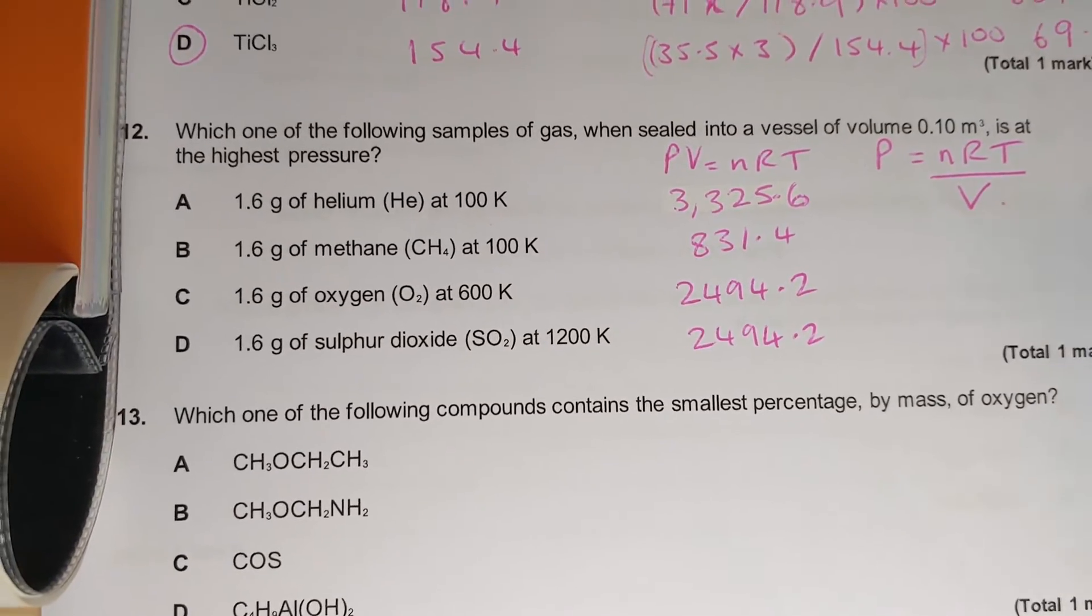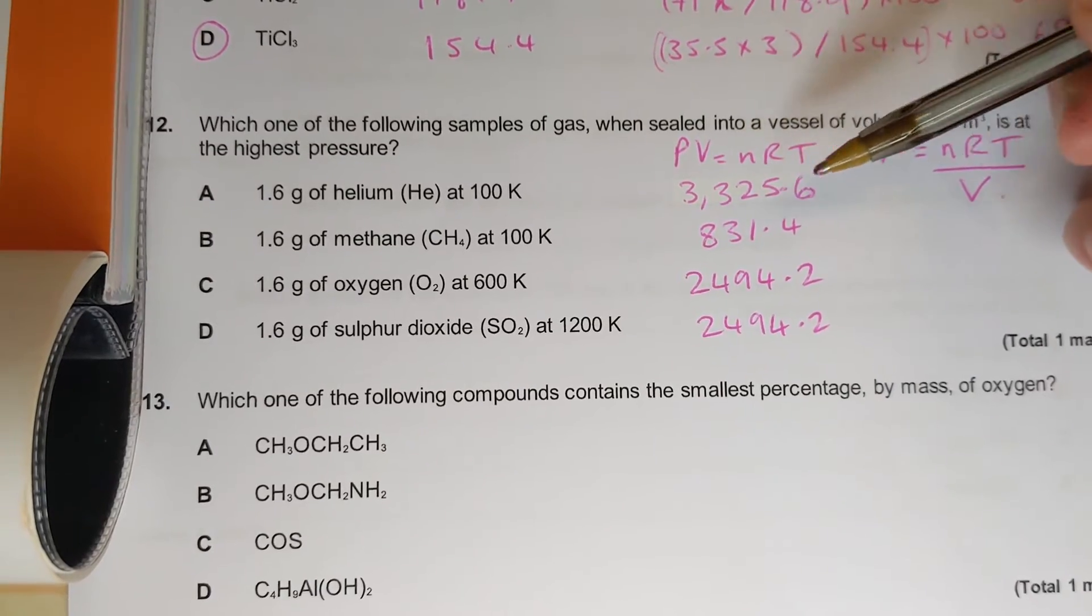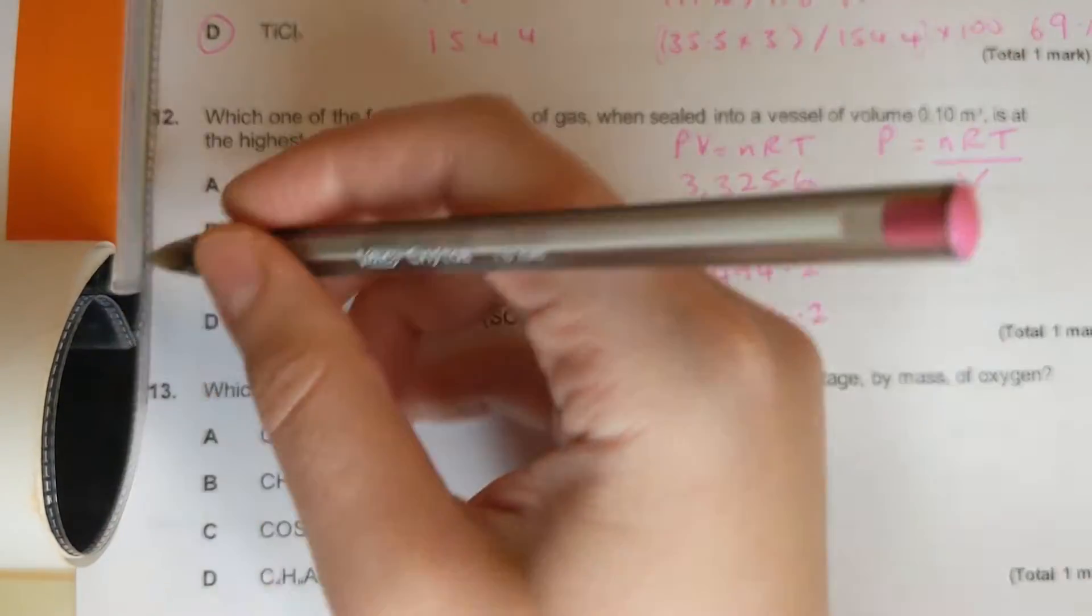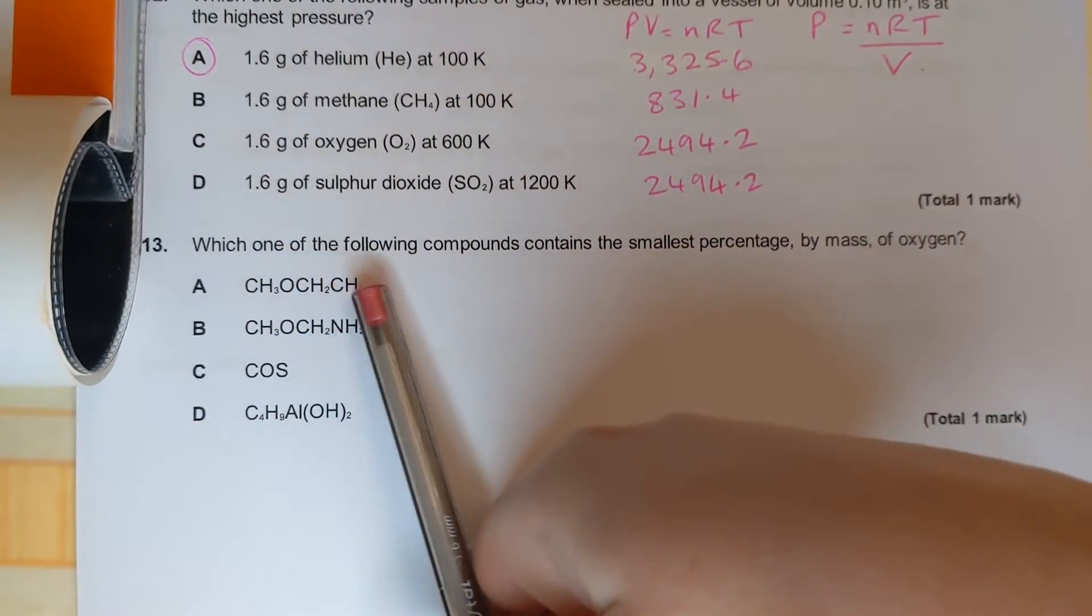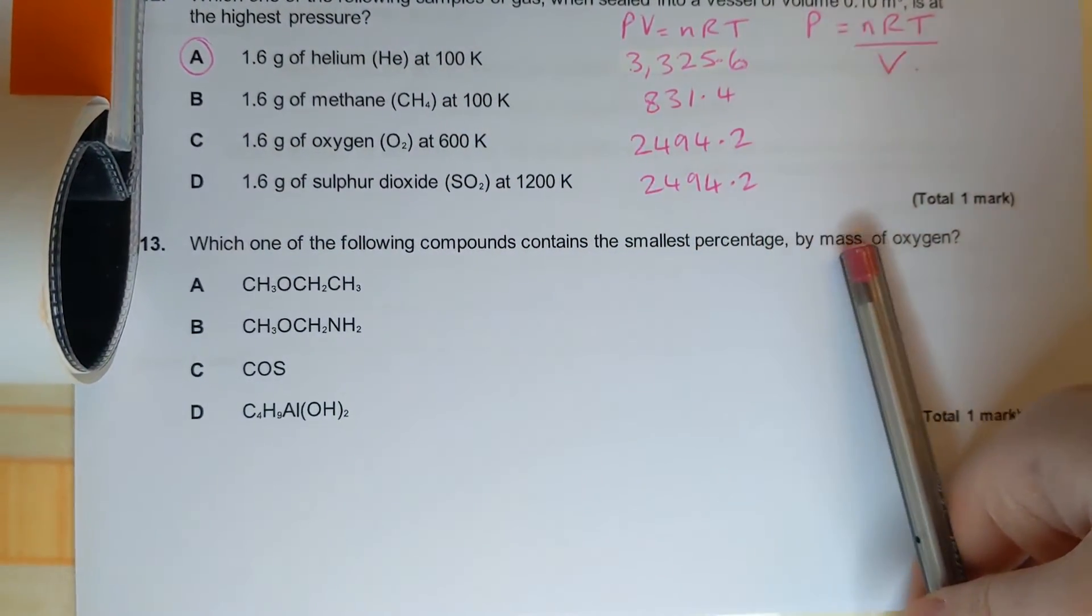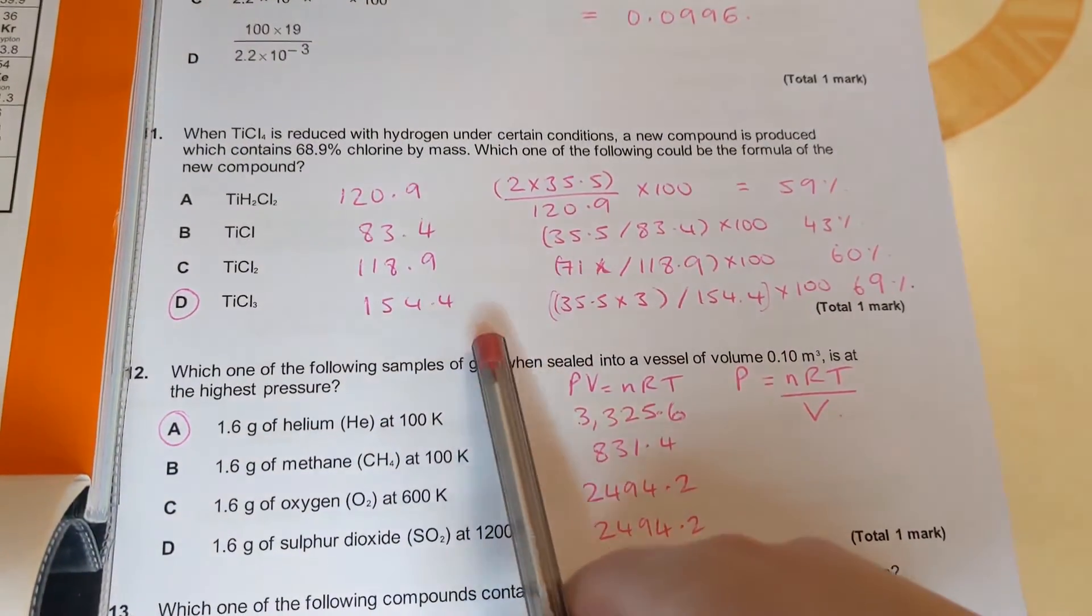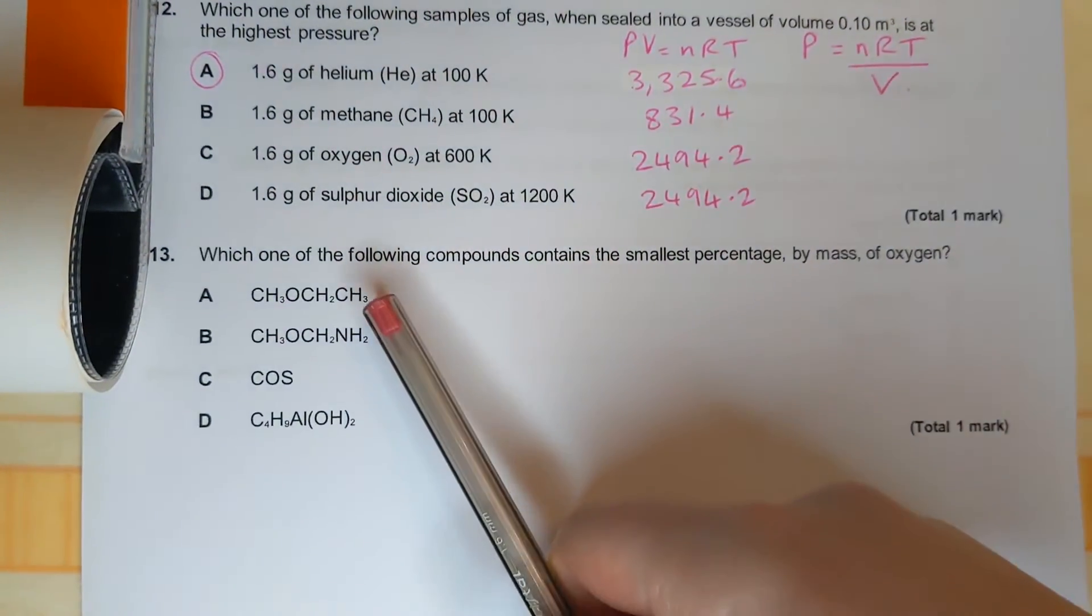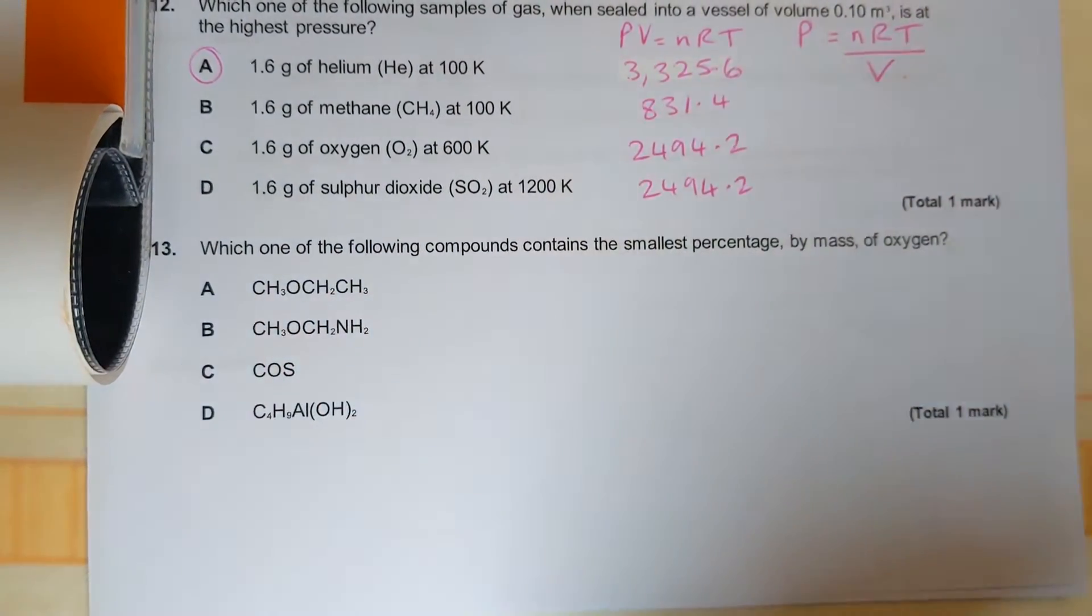Then lastly number 13: which of the following compounds contains the smallest percentage by mass of oxygen? So this is just like this one with the chlorine. First thing we're going to do is work out the molar mass of the whole compound.